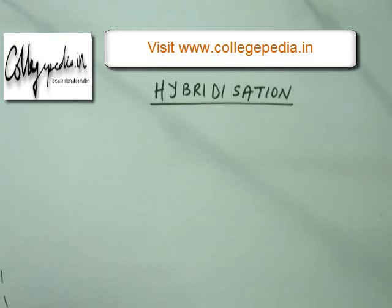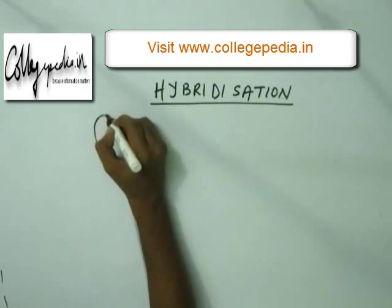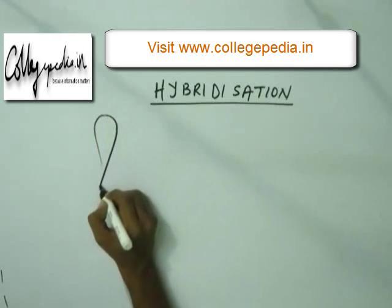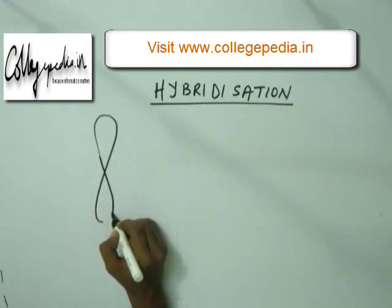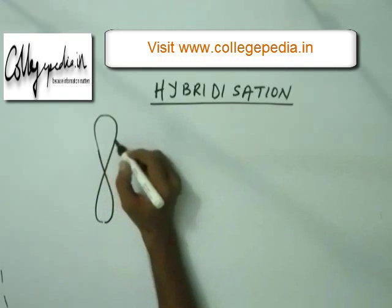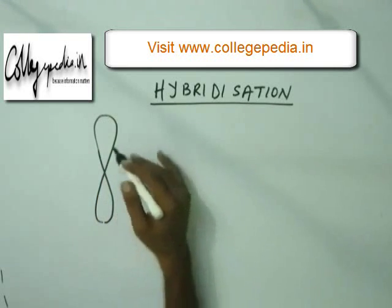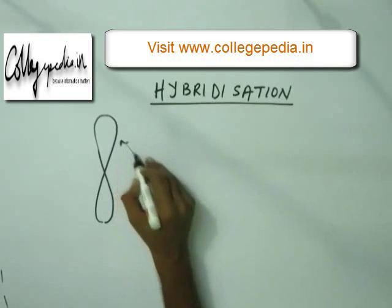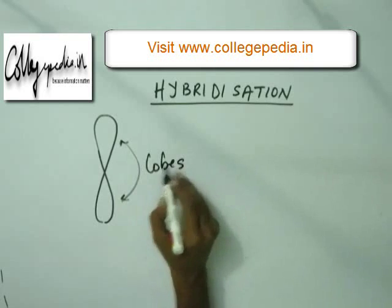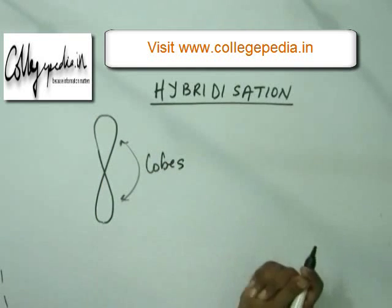Before giving you the definition of hybridization, let's talk about the shape of the P orbital. The P orbital, as you must be knowing — and in case you don't know, then know from now — the P orbital is of dumbbell shape. This dumbbell shape has two lobes: an upper lobe and a lower lobe. This is the shape of a P orbital.